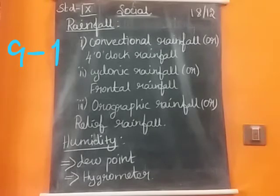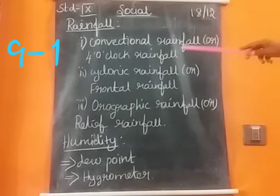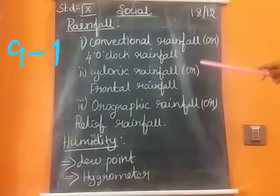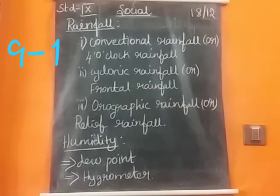Based on the mechanism of raising the air, there are three types of rainfall. That rainfall is classified into three: one is convectional rainfall or 4 o'clock rainfall; cyclonic rainfall or frontal rainfall; and orographic rainfall or relief rainfall. These are all the types of rainfall.